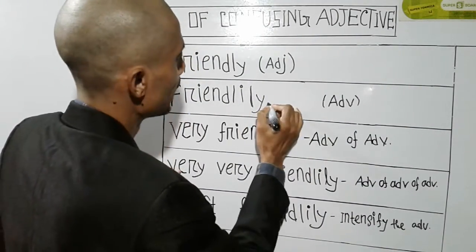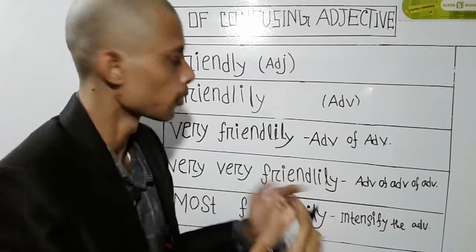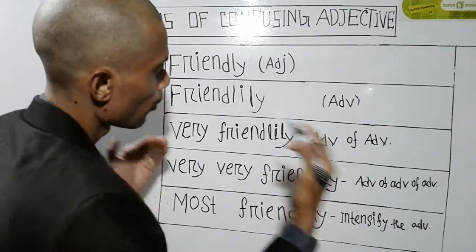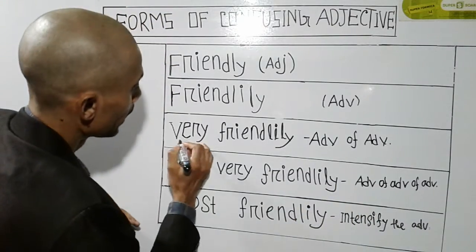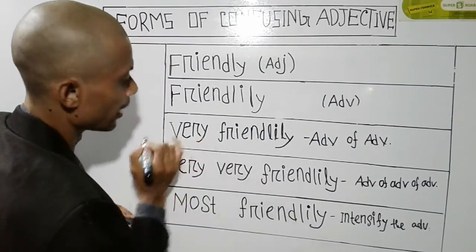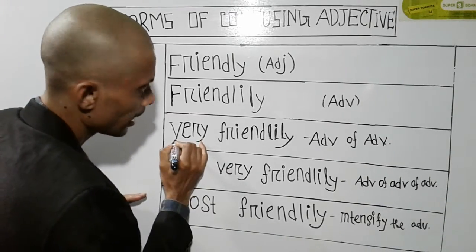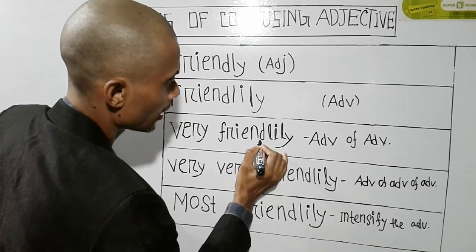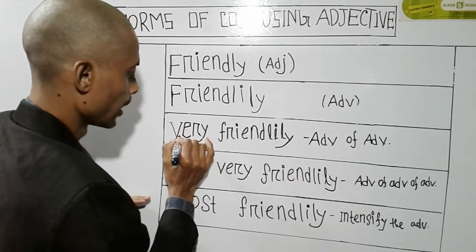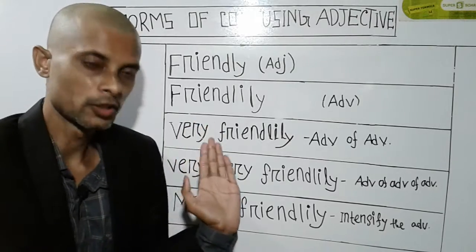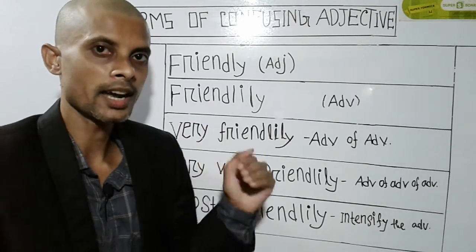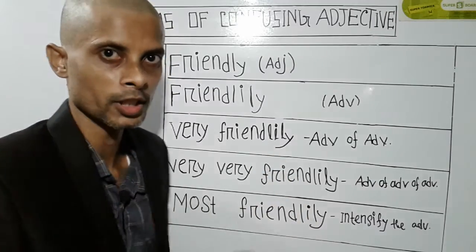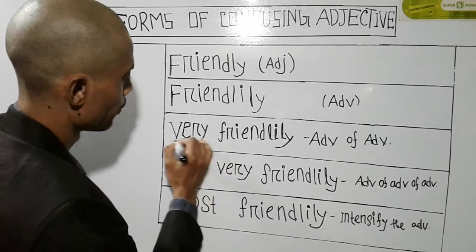So I said that friendly is the word for friendly. Adverb — so how do we do the adverb? It's very simple. Friendly will have a very — this very is the adverb. Adverb is the adverb. Friendly is the adverb. That is the adverb of very. We know that very is the adverb.